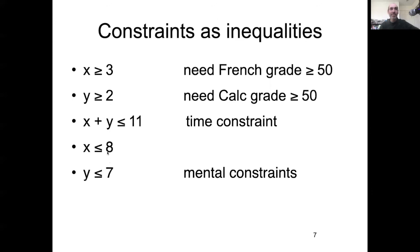You have these mental constraints. So x has to be less than 8, y has to be less than 7, because those were the points where you said after that, you stopped seeing improvement. And then you have this financial constraint. So the cost per hour of French times hours of French plus the cost per hour of math tutoring times the hours of math tutoring have to be less than my total budget of 100.